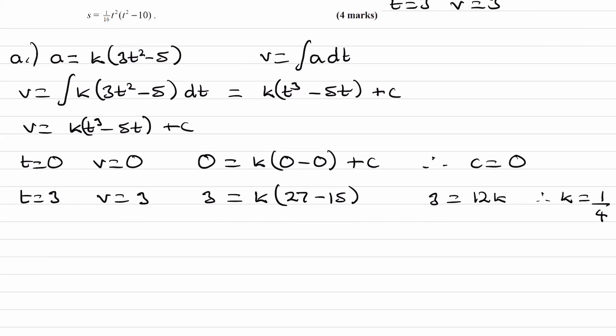So if k is 1 over 4, our acceleration is 1 quarter 3t squared minus 5.